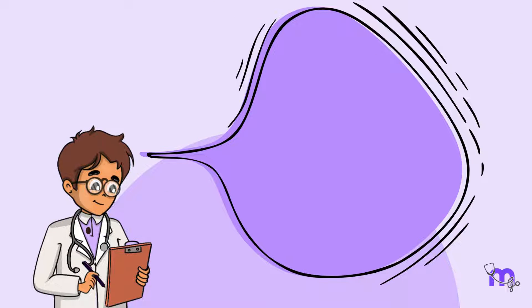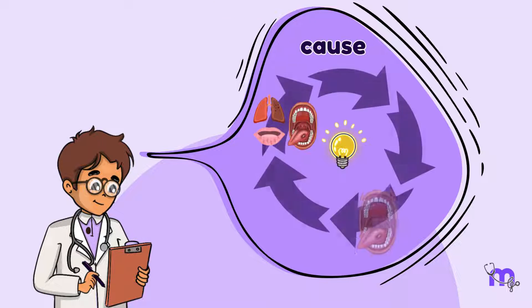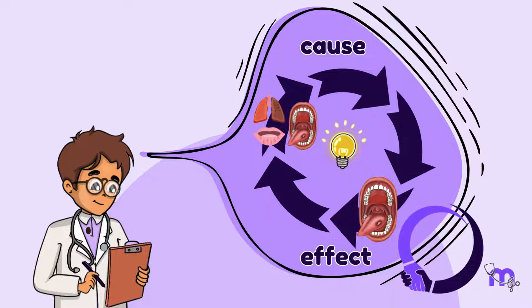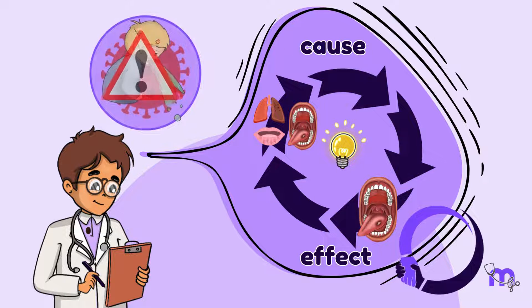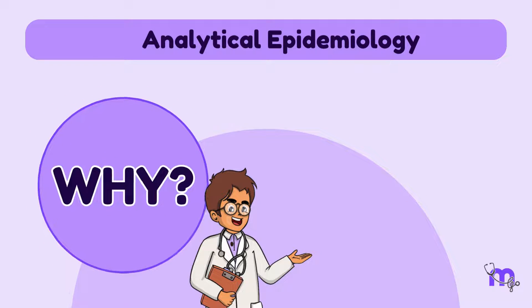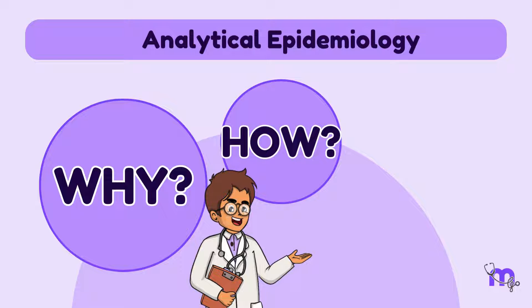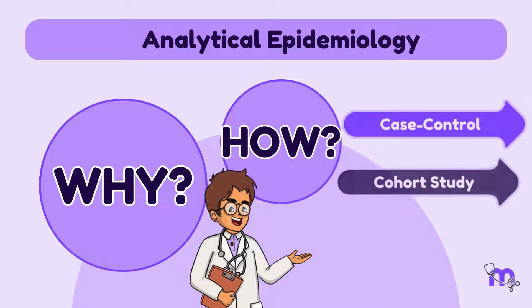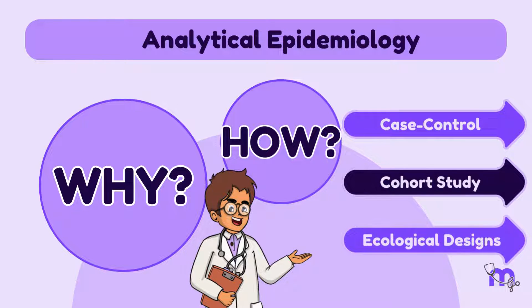In analytical epidemiology, I am concerned with the search for causes and effects of the disease, as this helps me assess whether there is a statistical association between the disease and the risk factor. In this type of epidemiology, I ask the question: why? And how? The three main designs of this study are Case Control, Cohort, and Ecological Designs.